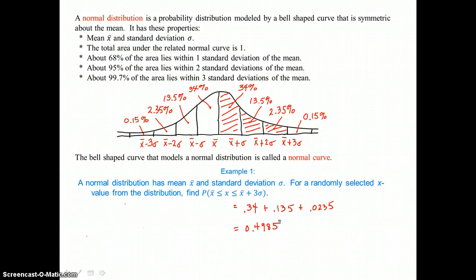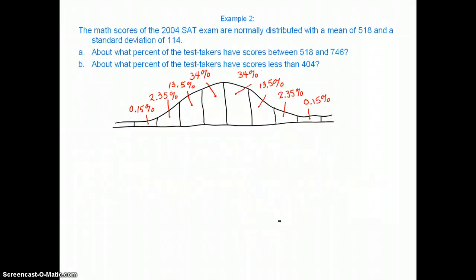And again, probabilities are written in decimal form. In example 2, the math scores of the 2004 SAT exam are normally distributed with a mean of 518 and a standard deviation of 114.